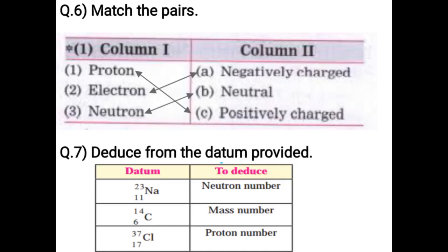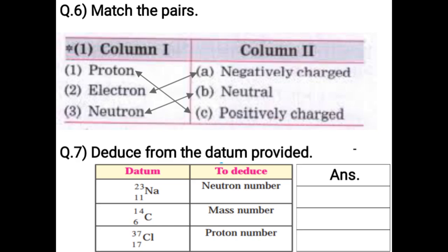Deduce from the data given. For ²³Na₁₁: atomic mass number is 23, atomic number is 11. Neutron number = atomic mass number − atomic number = 23 − 11 = 12. For ¹⁴C₆: atomic mass number is 14. For ³⁷Cl₁₇: atomic mass number is 37, atomic number is 17. The number of protons equals the atomic number, so proton number is 17.